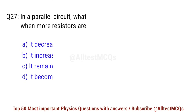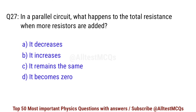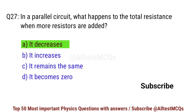Question number 27. In a parallel circuit, what happens to the total resistance when more resistors are added? The right option is A. It decreases.